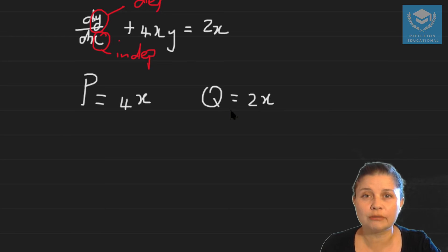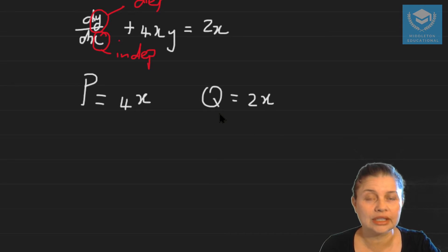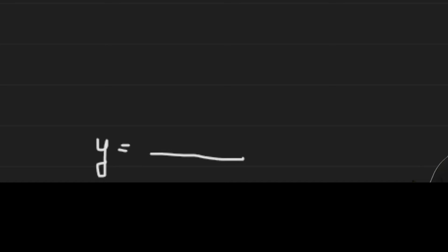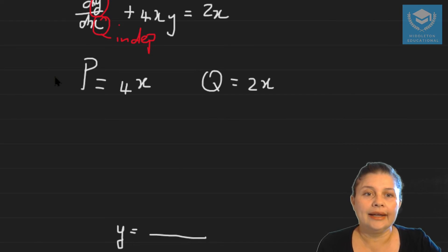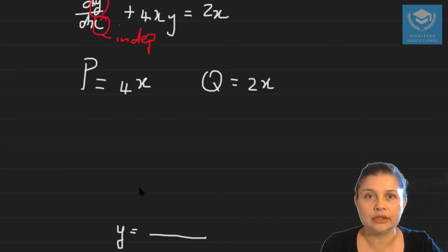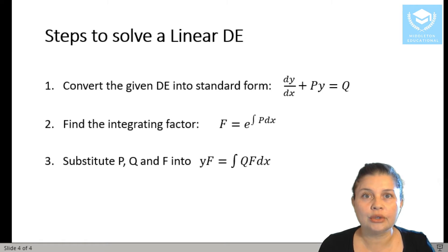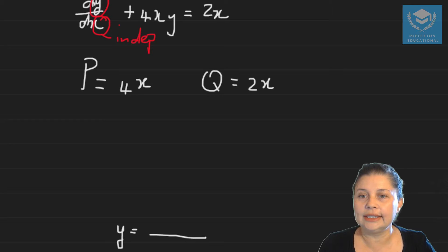That also satisfies the definition of p and q, because all you've got in there are your independent variables. Remember, you can't have any dependent variables — constants are fine, but not the dependent variable. So what we want to do here is solve this differential equation, which means we want to eventually get an expression where y is equal to something. The method I'm going to show today is really a proof of how we get to the final step formula in our presentation, so I'm going to show you how we get to that formula.